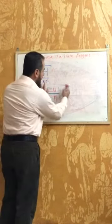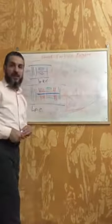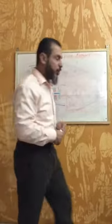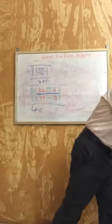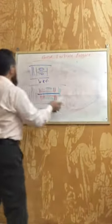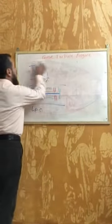This is a twin spool arrangement. It may also be a triple spool engine with three compressor stages each connected to its own turbine through separate shafts.